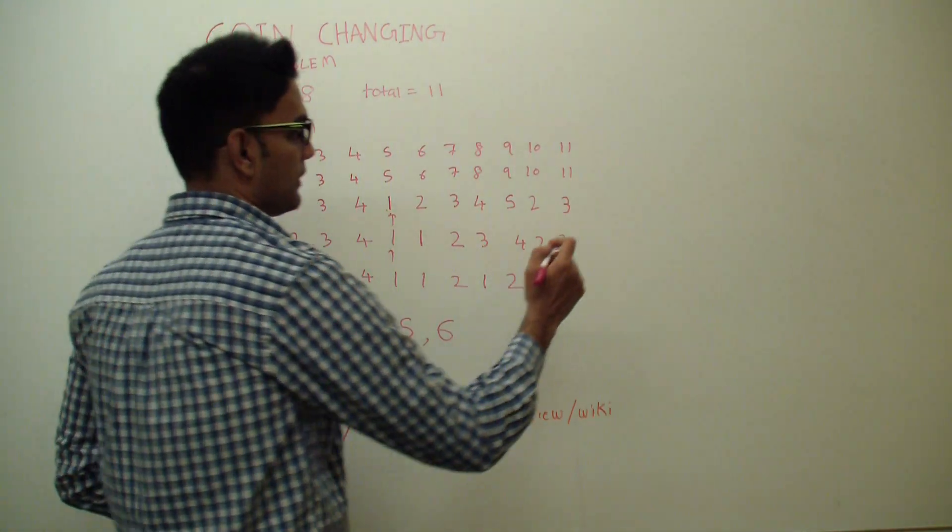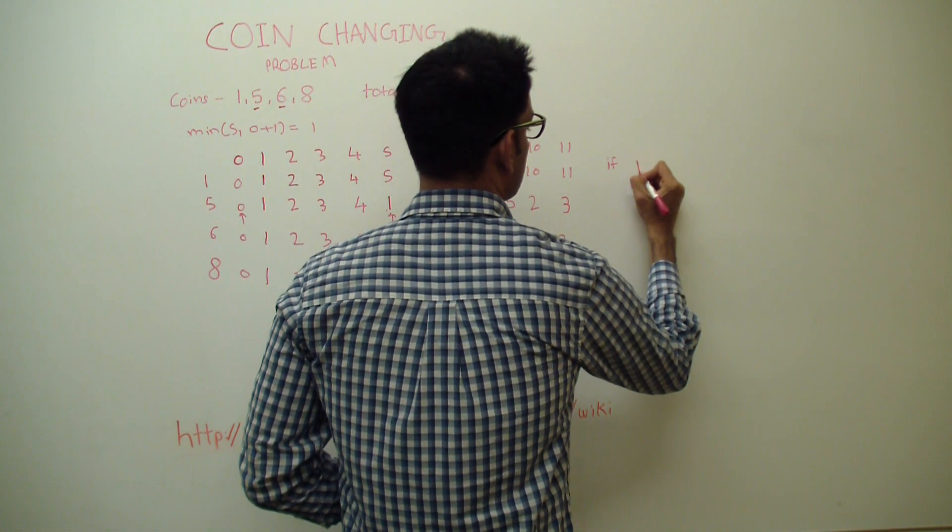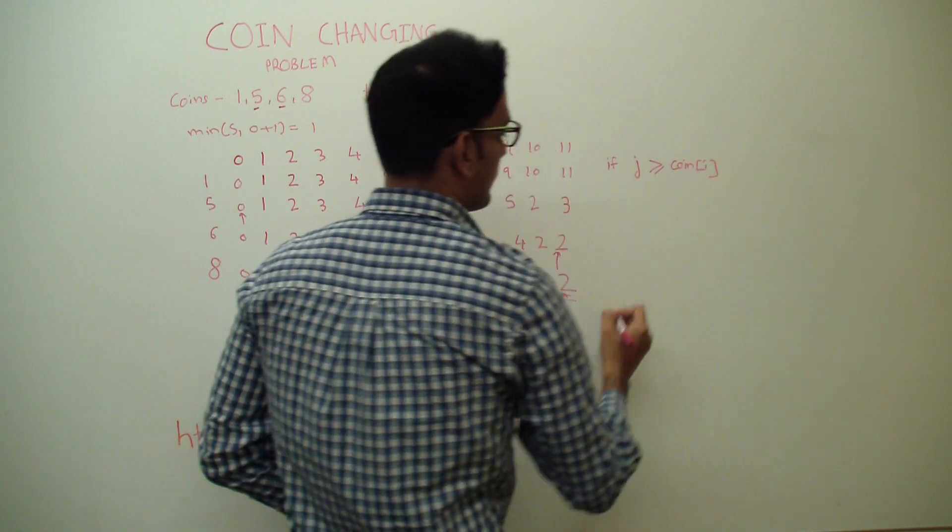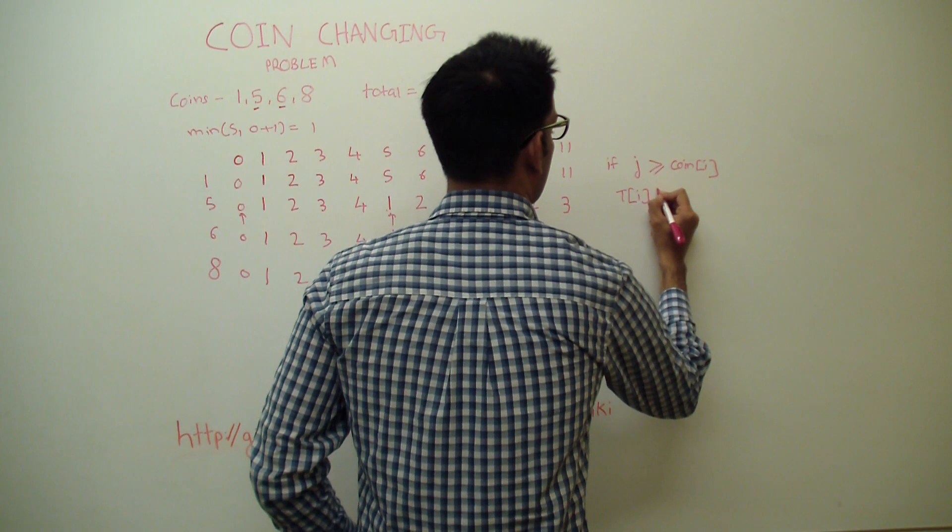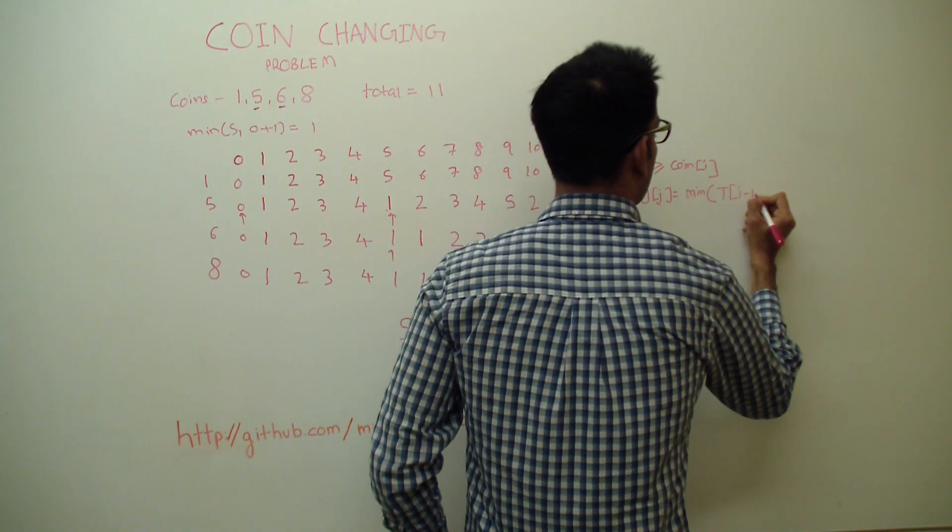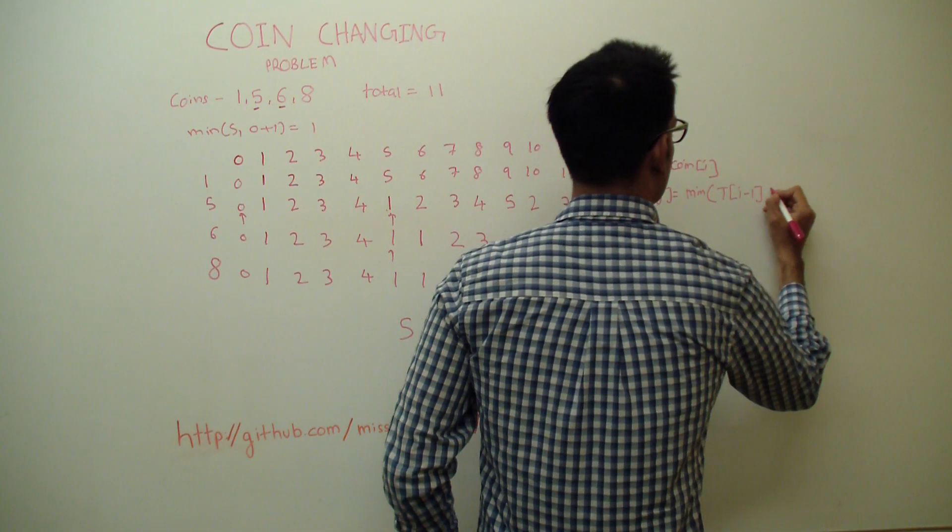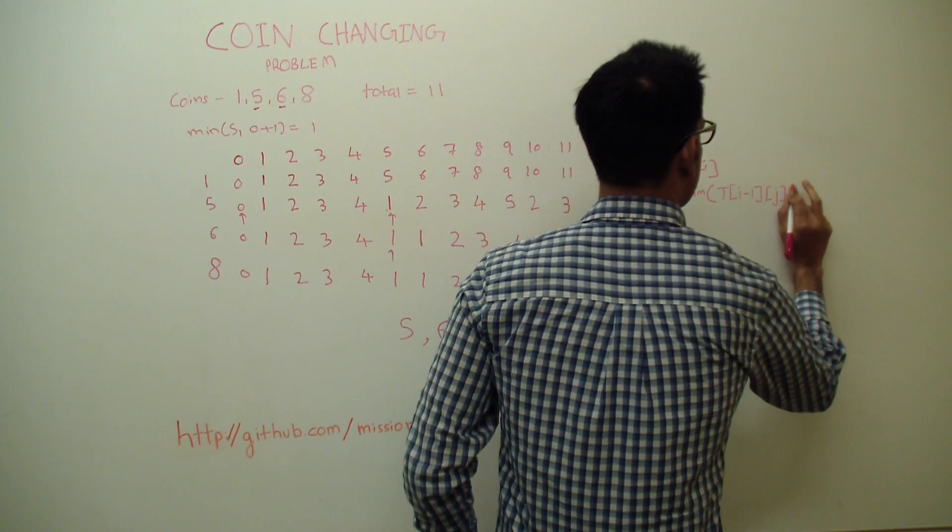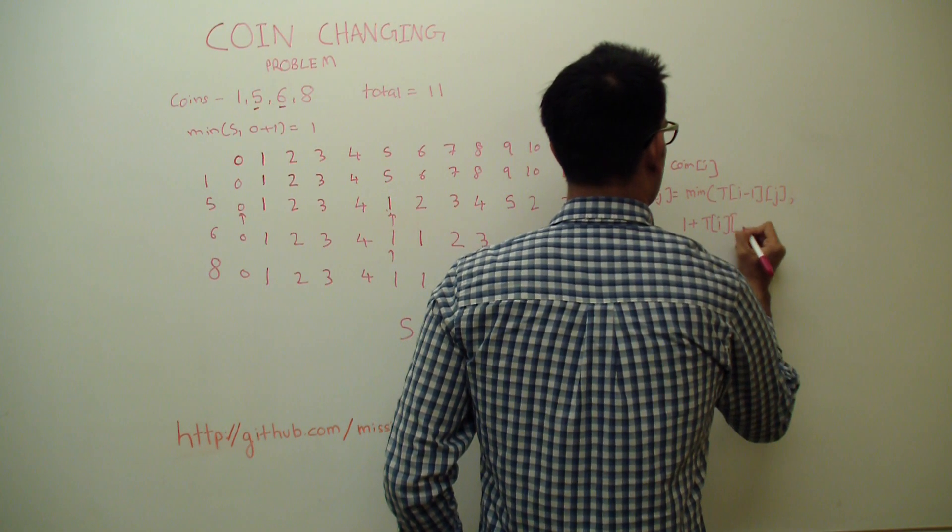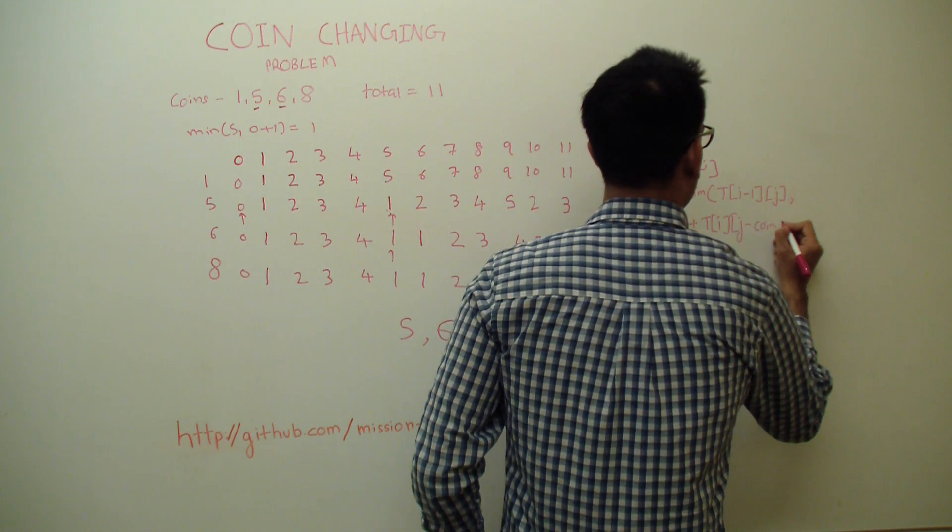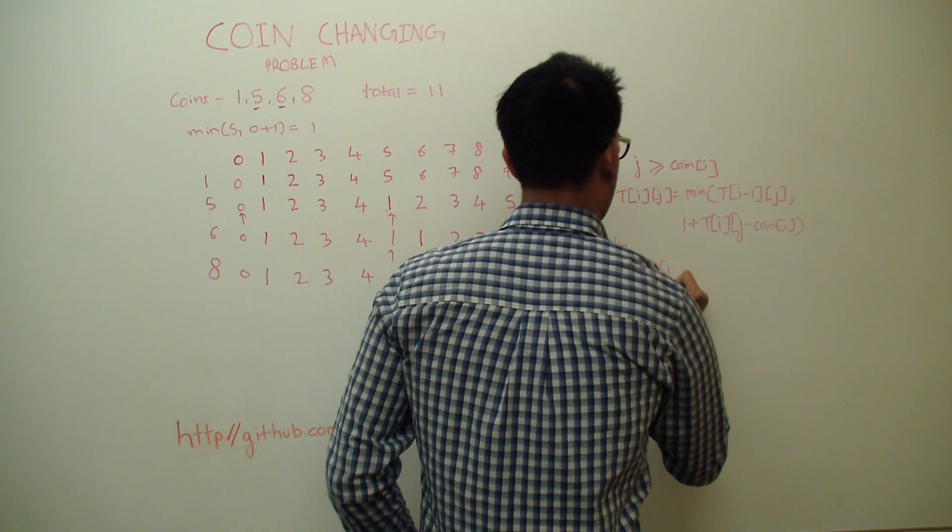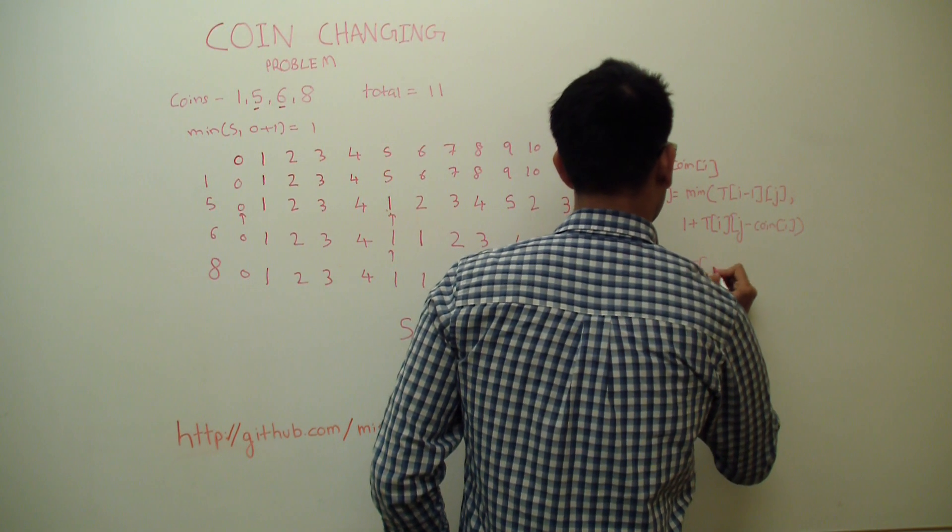So let's write the formula for this one. If j is greater than or equal to coins[i], then T[i][j] is equal to min of T[i-1][j] or 1 plus T[i][j-coins[i]].